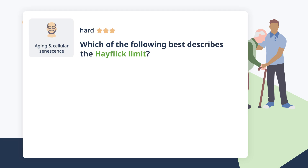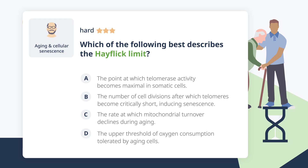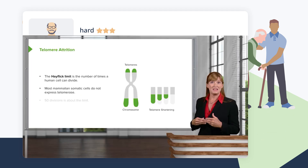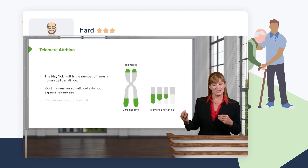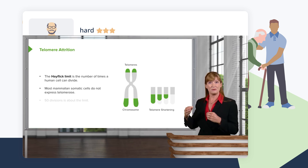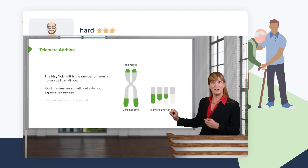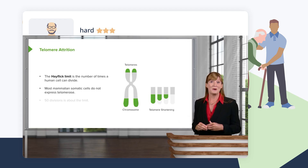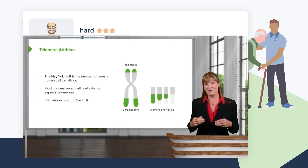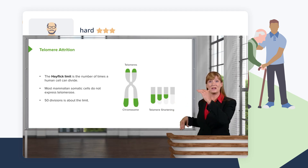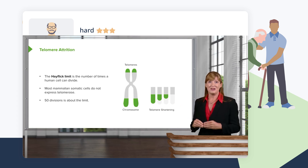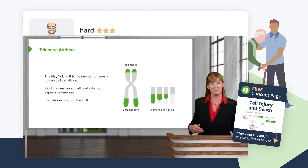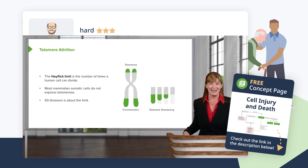Which of the following best describes the Hayflick limit? The Hayflick limit suggests there are a limited number of cell divisions that somatic cells can undergo — approximately 50 — before the telomeres become short enough to damage sub-telomeric regions of the chromosome. After that, each cell division shortens the ends of the chromosomes until we start nibbling away at the genes located there, which can have significant effects on cell condition.